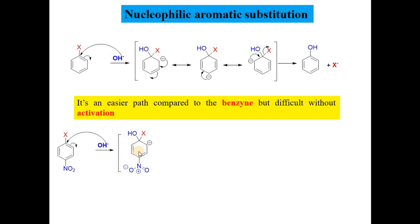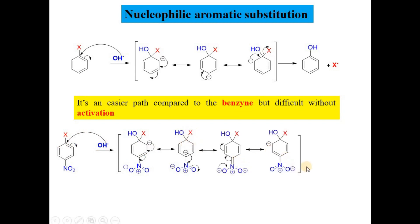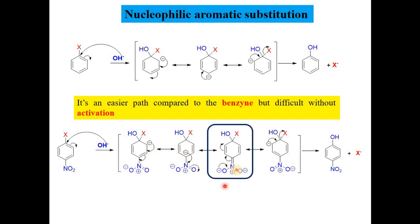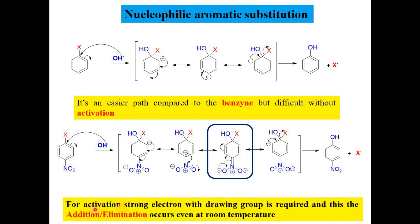The electron-withdrawing group further stabilizes the negative charge on the carbon through resonance. In the final step, electrons shift to the para position and the leaving group X departs, completing the nucleophilic substitution. Thus, nucleophilic substitution of an aromatic ring can be carried out in the presence of strong electron-withdrawing groups, and this addition-elimination reaction can proceed even at room temperature.